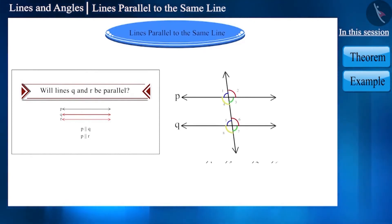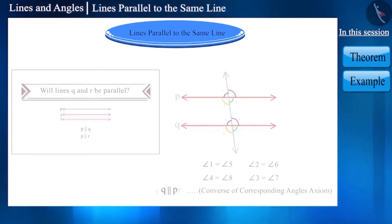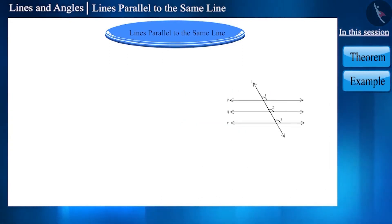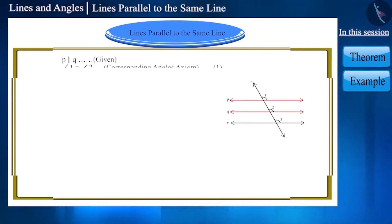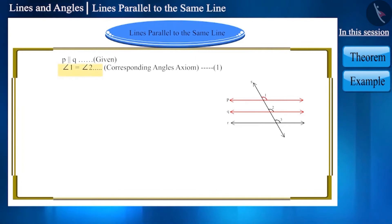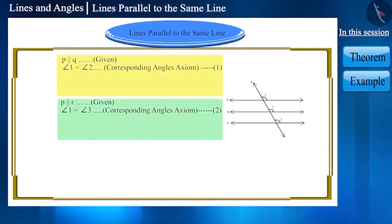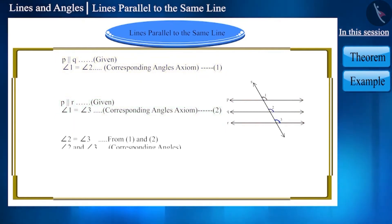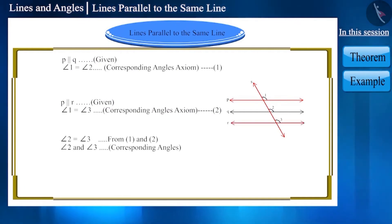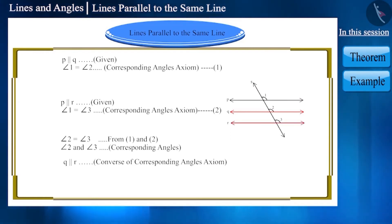Drawing a transversal line S: since lines P and Q are parallel, by the corresponding angles axiom, angle 1 equals angle 2. Since lines P and R are also parallel, angle 1 equals angle 3. From both statements, angle 2 equals angle 3. These are corresponding angles formed by transversal S with lines Q and R. Using the converse of the corresponding angles axiom, lines Q and R are also parallel. Theorem: lines that are parallel to the same line are parallel to each other.